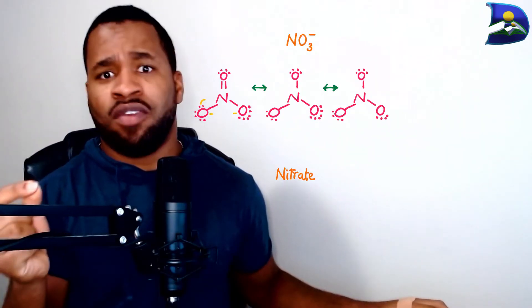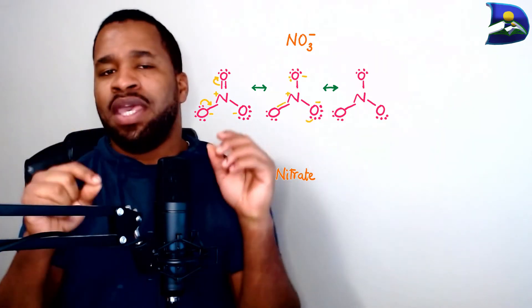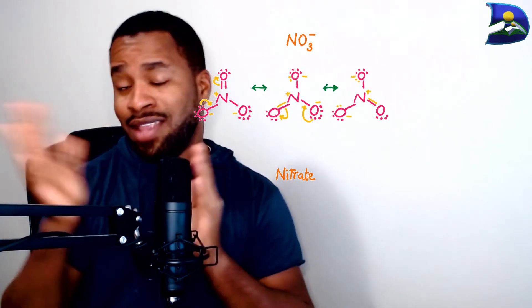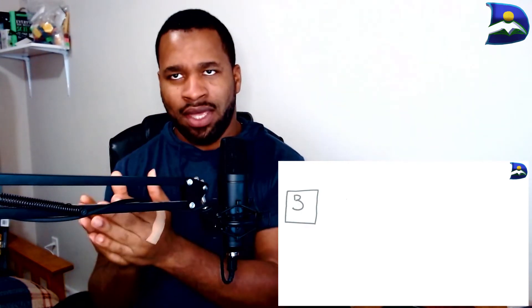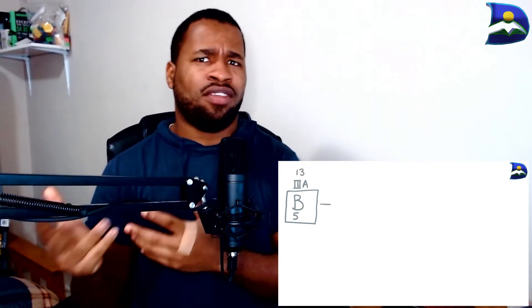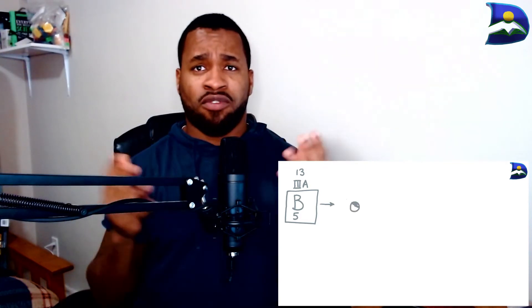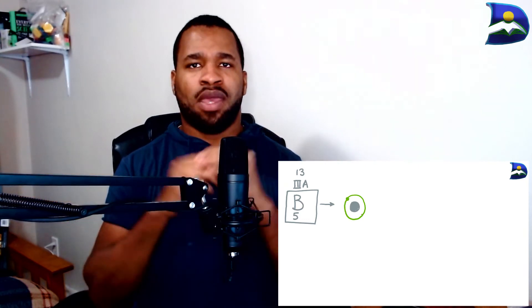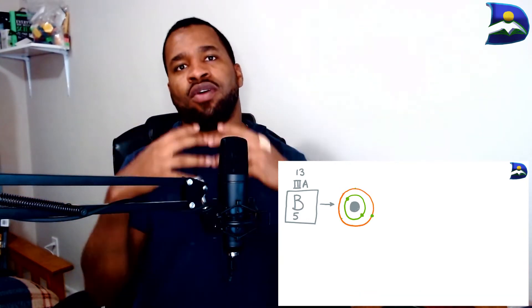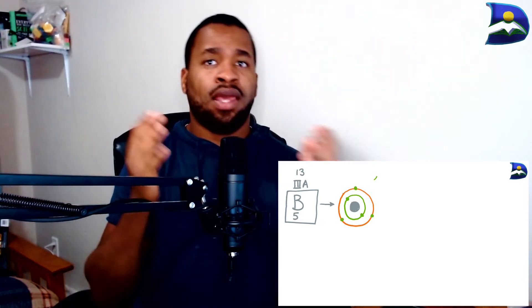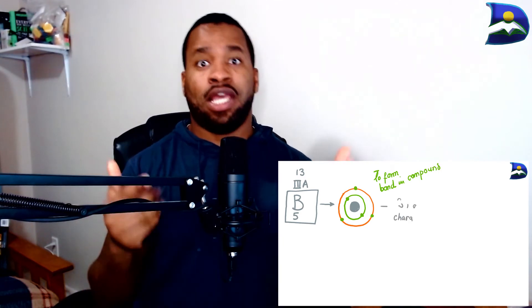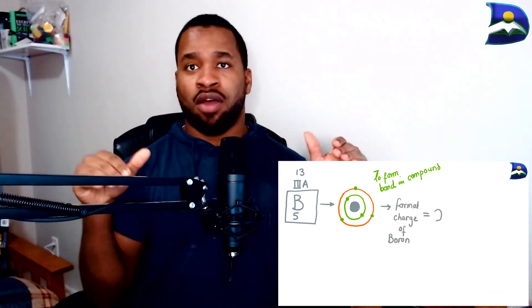In these notes we also looked at nitrate and BF4−, both with a charge of negative one — really interesting to address. Boron is in group 13, and while group 13 typically obtains an octet by losing three electrons, boron is an exception: it forms covalent bonds to obtain its octet and can expand its octet to reach eight electrons.